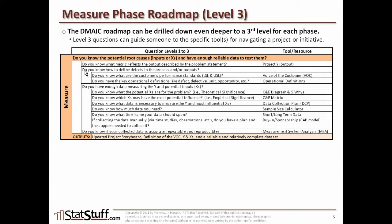Once you've defined the project Y, you move on to the next second-level question: do you know how to define defects in the process and or in the outputs? If you can't answer yes, we move to the third layer, starting with: do you know what the customer's performance standards are, like the lower spec limit or the upper spec limit? If not, you want to understand the requirements as defined by the customer — the voice of the customer, or VOC. Once you can answer yes, you move to the next third-level question: do you have the key operational definitions, like what's a defect, what's defective, what is a unit, what's an opportunity, or any other key acronyms or terms necessary for the project? The operational definitions tool helps you define those critical elements.